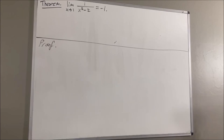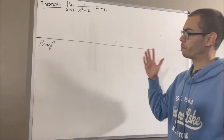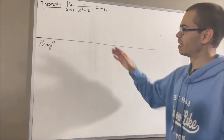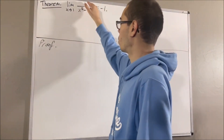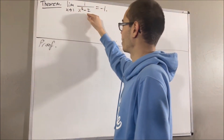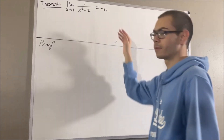Hello! In this video, we are going to prove the following theorem: the limit as x approaches 1 of 1 over x squared minus 2 is equal to negative 1.